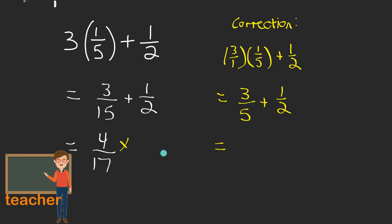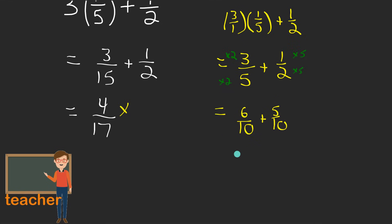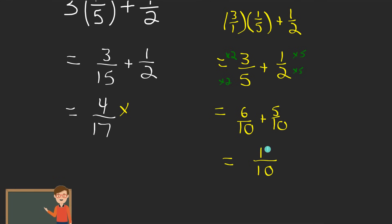And when adding fractions, do not forget to get a common denominator. One fraction has a denominator of 5, the other a denominator of 2. A common denominator between those two would be 10. So I'll make this one be 10 by multiplying top and bottom by 2, and this one would be 10 by multiplying top and bottom by 5. That gives me 6 over 10 plus 5 over 10. When adding fractions, you keep the common denominator — don't add the denominators. You keep the common denominator and just add the numerators: 6 plus 5 is 11.